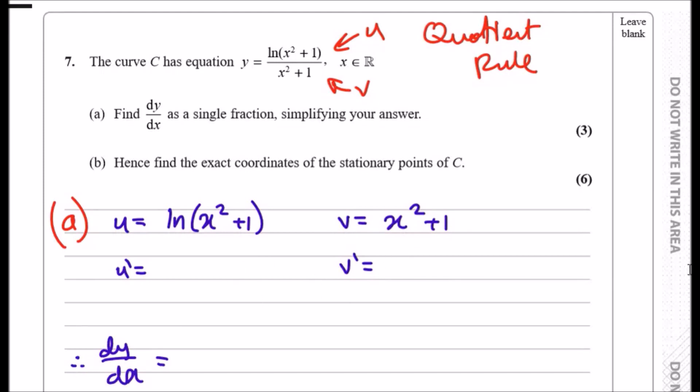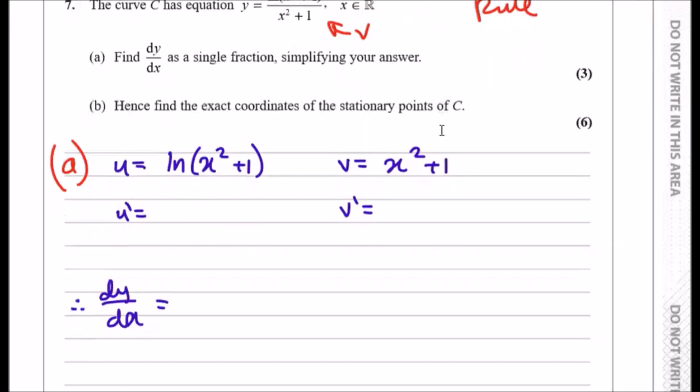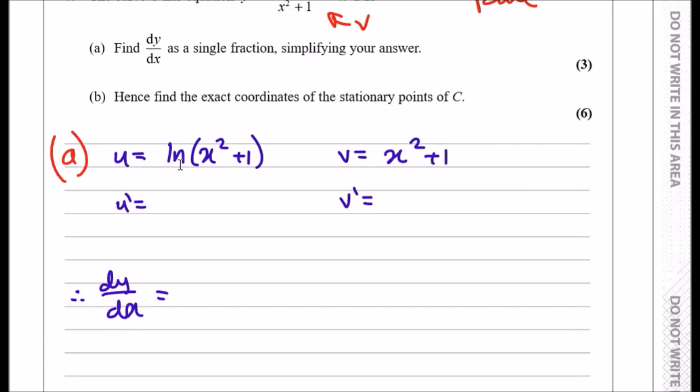So just like I did over here, differentiate each one and then use the quotient rule method to stick them together. To differentiate the u function ln of x squared plus one, you simply just differentiate the inside, which would be 2x, and divide it by itself x squared plus one. That's how you differentiate every single log function. For the second one, that's straightforward. It just becomes 2x.